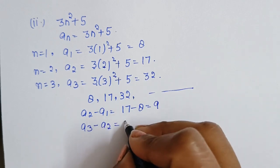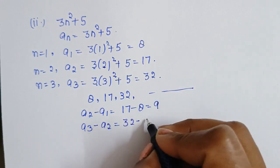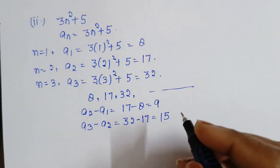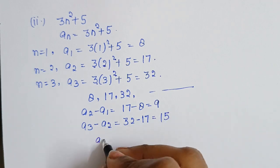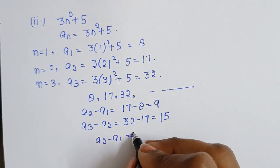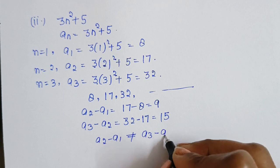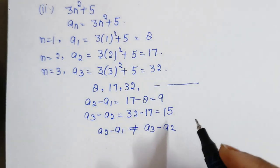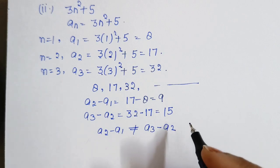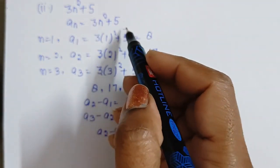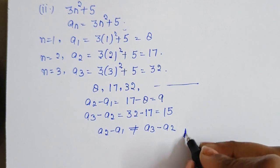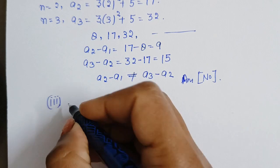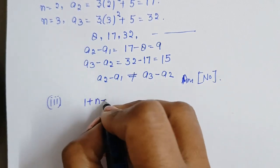Checking: a2 − a1 is not equal to a3 − a2, which means this does not form an AP series. So the answer is no — the nth term 2n − 3 does not represent an AP.